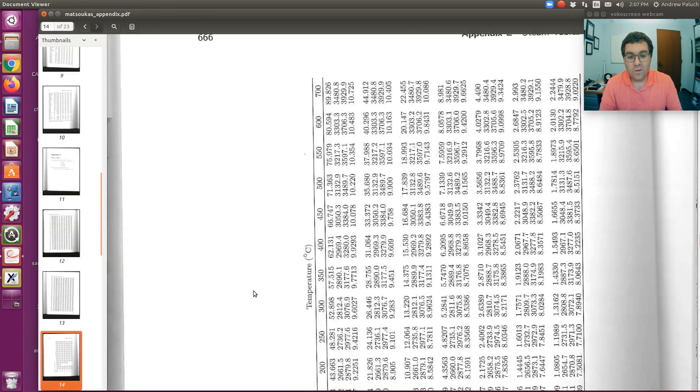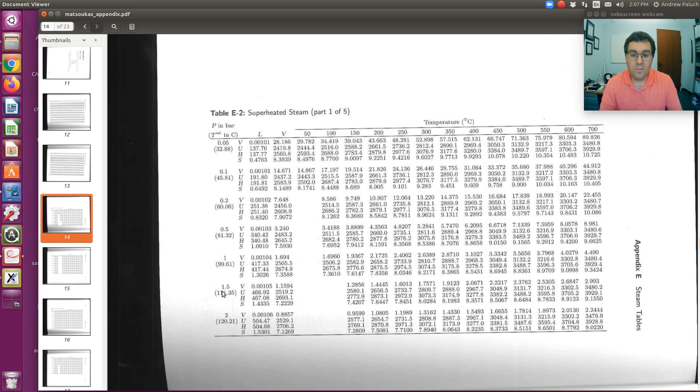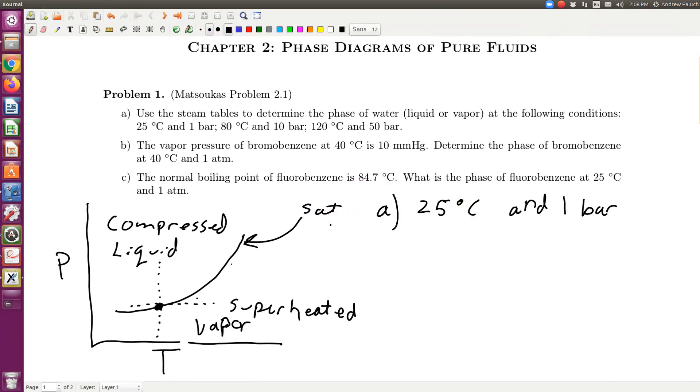If I were to go to the superheated steam tables, just as a comparison, the difference is here you essentially can specify P. You specify P, then in parentheses below it, it's going to give you the saturation temperature in degrees C. Now 25 degrees C, if you think of one bar, we know that water at one bar boils at 100 degrees C. From the superheated steam tables, we get an exact value of 99.61. So if I go with that, if I say at one bar, T_sat is equal to 99.61 degrees C.